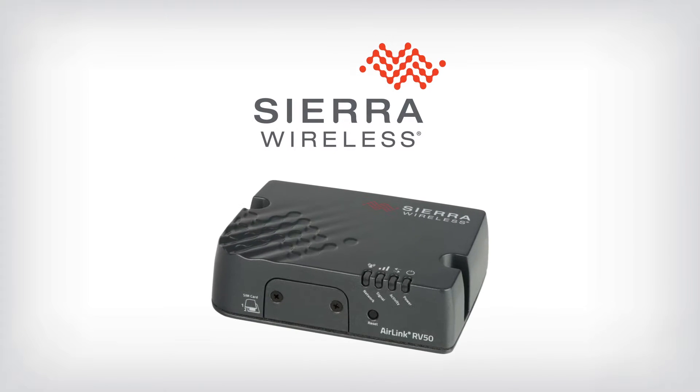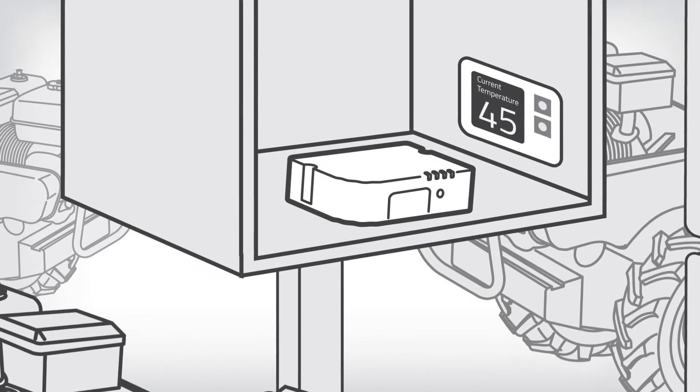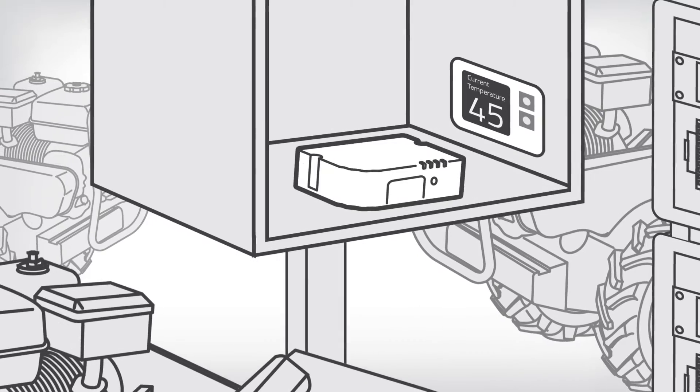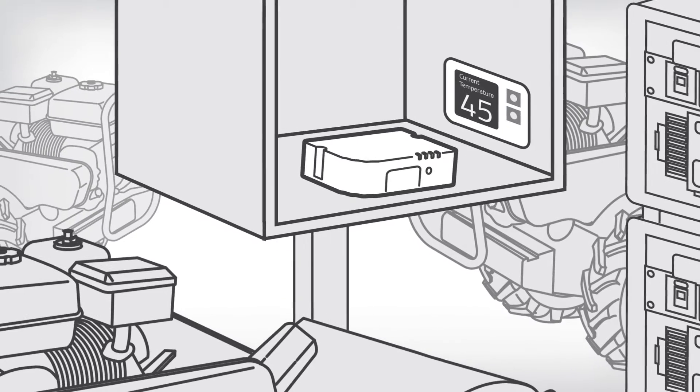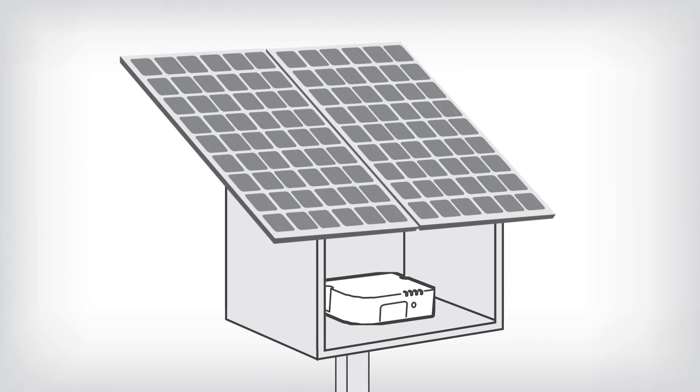Introducing the AirLink Raven RV50 Industrial LTE Gateway. From the market leader in cellular gateways, Sierra Wireless, the Raven RV50 is industrial-grade, specifically designed for operations in challenging and hazardous environments. It is easy to install and is optimized for solar applications.